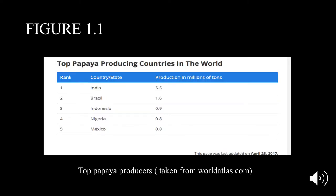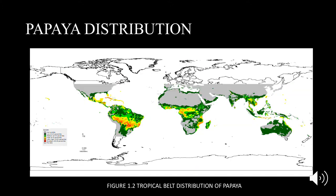Figure 1.1 displays the largest producers of papayas in the world. Although Hawaii is not displayed here, it is known that they produce 95% of papayas on their small island. As mentioned, papayas thrive more in tropical conditions. If we look at figure 1.2, we can see that the distribution of the species is mainly close to the equator.